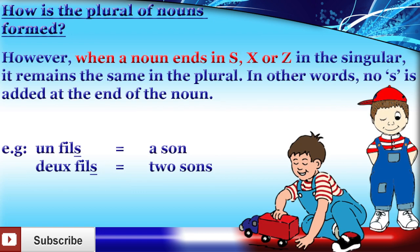However, when a noun ends in S, X, or Z in the singular, it remains the same in the plural. In other words, no S is added at the end of the noun. For example, un fils, a son, deux fils, two sons.